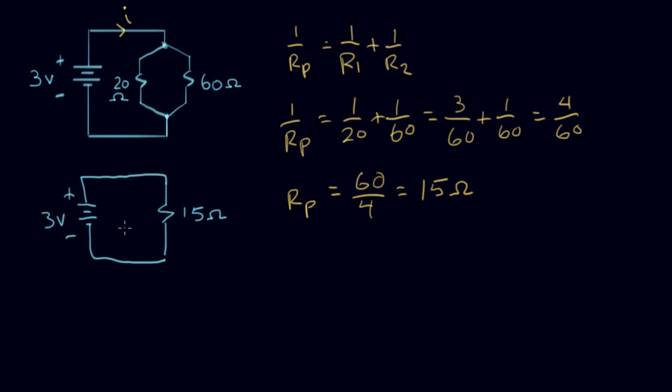Let's check what the current is. The current I equals V over R equals three volts over 15 ohms. That's equal to 0.2 amps, or you can say it's the same as 200 milliamps.